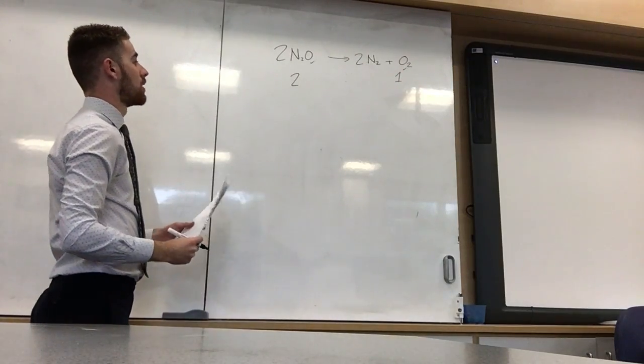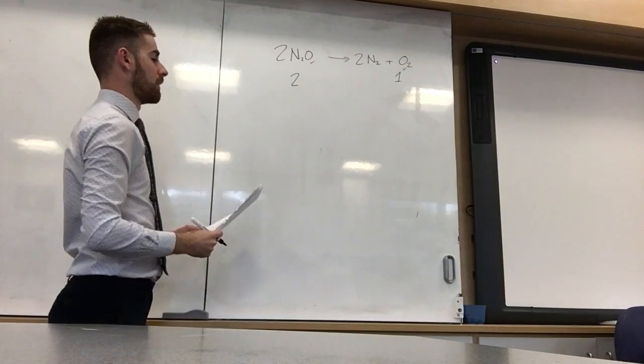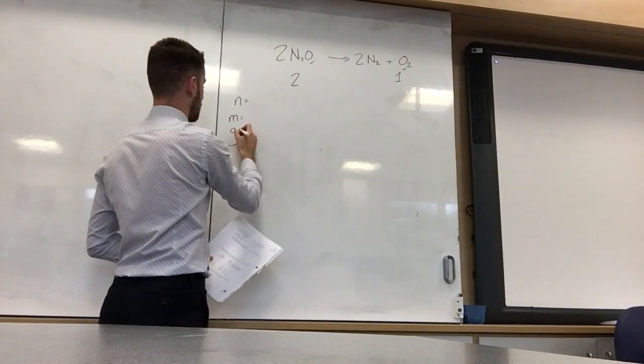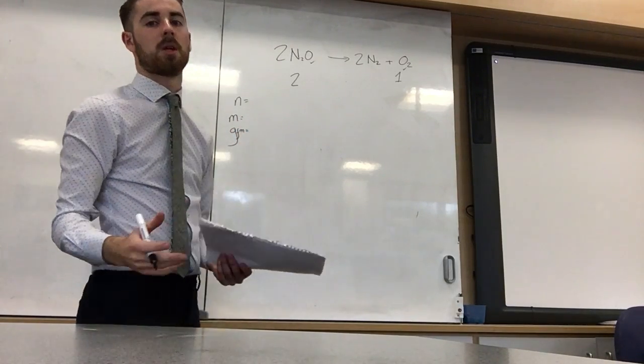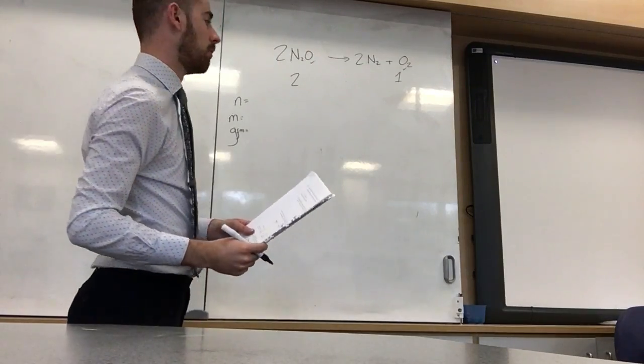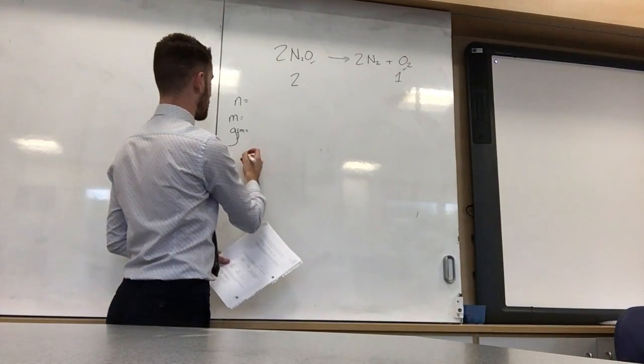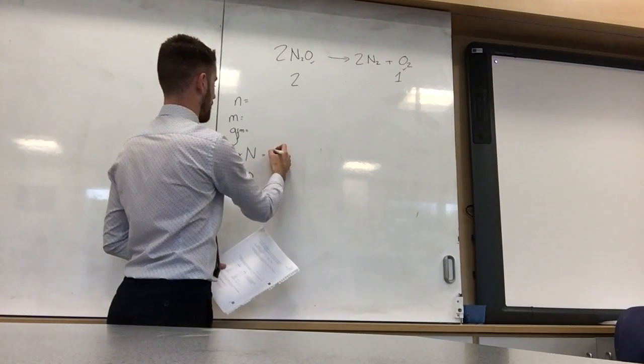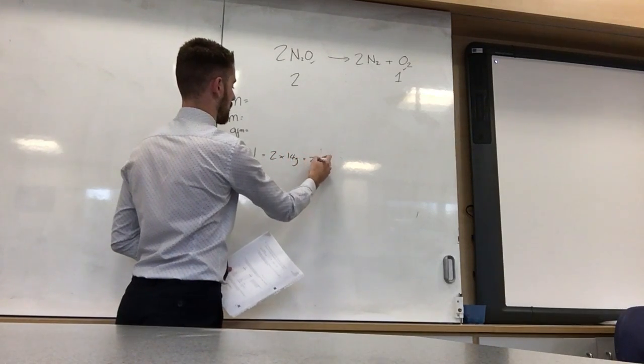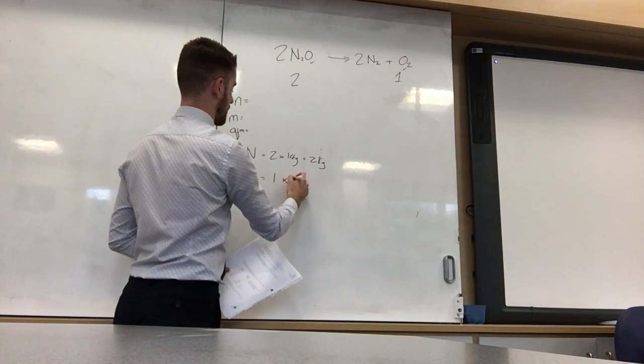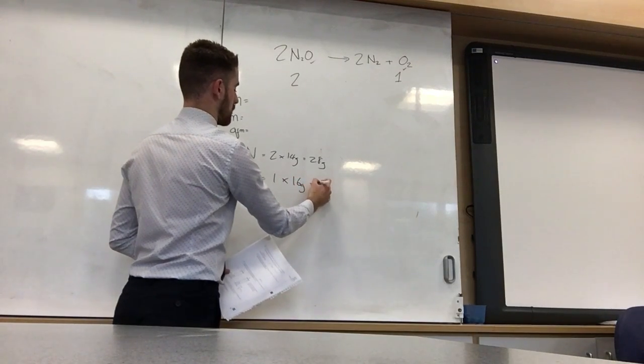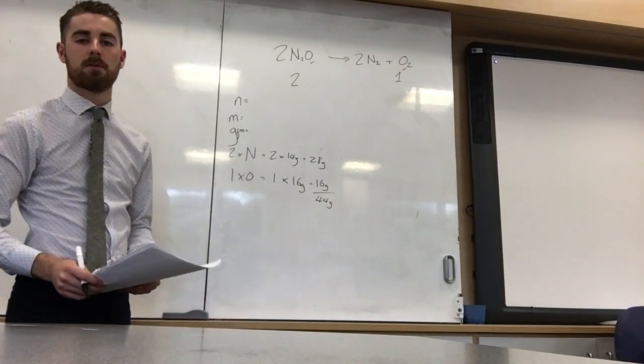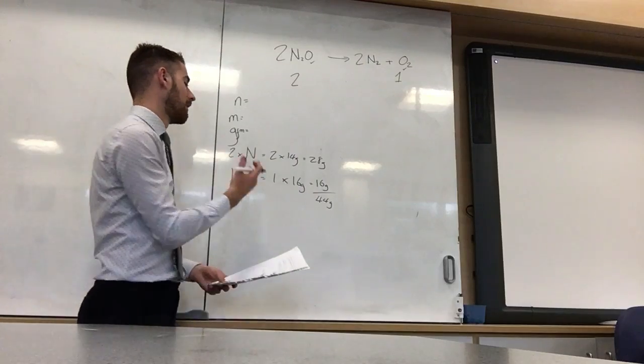So first step. Second step is we're going to work out the number of moles we have of dinitrogen monoxide. So number of moles, mass and GFM. GFM being the gram formula mass, the total mass of all the atoms present in the compound. So let's take stock of the atoms. We have 2 nitrogen atoms and 1 oxygen. 2 nitrogen is 2 times 14 grams, which gives you 28 grams. 1 times 16 is the mass of oxygen, which gives you 16 grams. So 28 plus 16 gives you 44 grams. So we've worked out the gram formula mass of dinitrogen monoxide to be 44 grams.